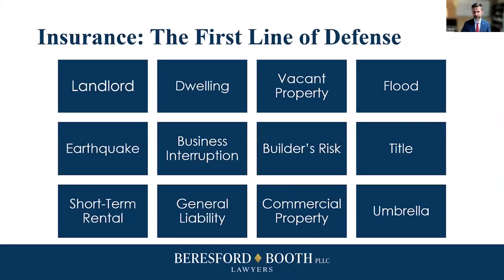I'll start first with landlord insurance. Landlord insurance is geared towards both commercial and residential landlords, and it protects the structure — the home, the building — and provides liability coverage. So it's kind of a two-in-one geared towards landlords and aimed at the risks that landlords face. Dwelling insurance is just for the building itself — that's a coverage a lot of people have, and it's a property insurance coverage.